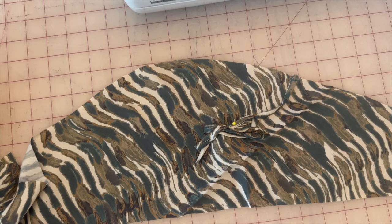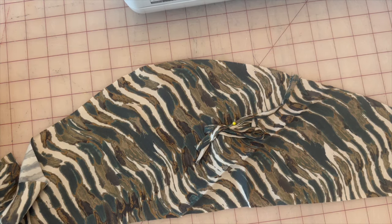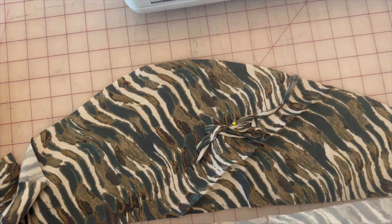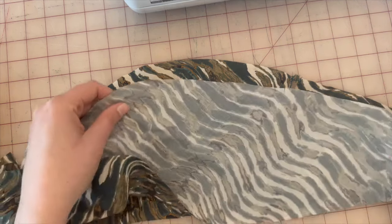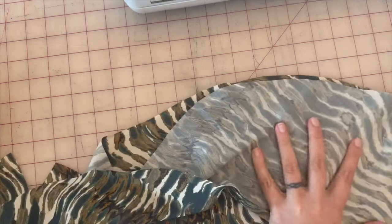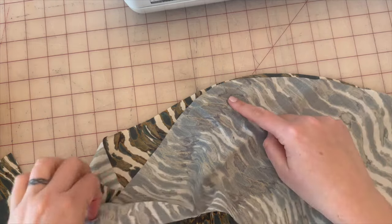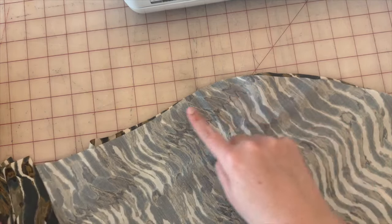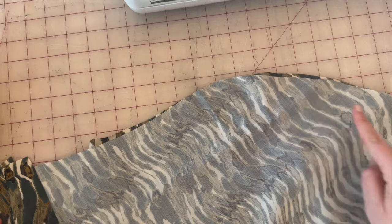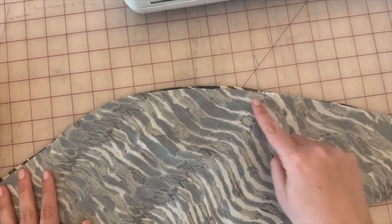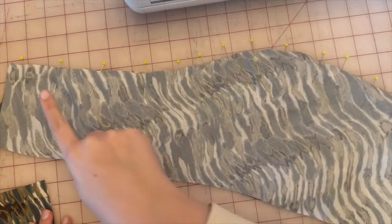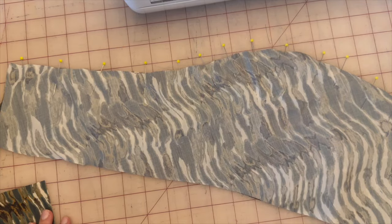Next, we're going to take our left front piece and take our left front lining. And we're going to go ahead and pin them together just at the top. And we're going to sew it together 5/8ths of an inch all the way from one side to the other, just at the top where the strap is. So now that we've pinned it together, go ahead and stitch 5/8ths of an inch.